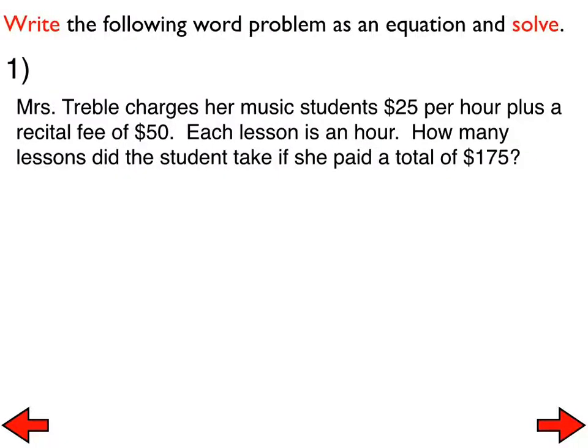Here is number one. It is written down in your notes. Mrs. Treble charges her music students $25 per hour plus a recital fee of $50. Each lesson is an hour. How many lessons did the student take if she paid a total of $175? Well, here's the deal. If Mrs. Treble, or I guess actually, if the student had a lesson of one hour, here's how you would figure that out. It would be 25 times the one hour and then plus the $50 recital fee, which would be $75. Do we all agree with that? 25 times 1 is 25 and 25 plus 50.